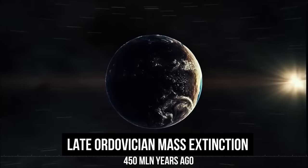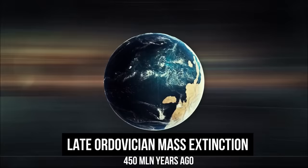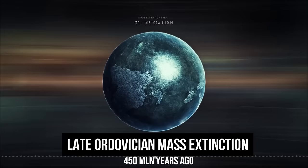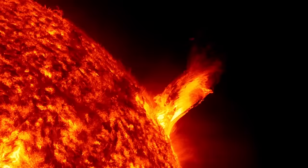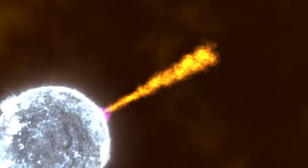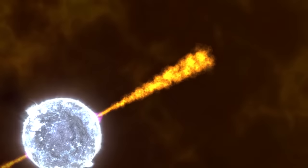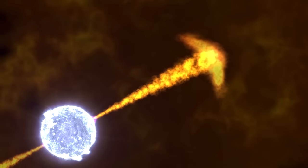Paleontologists suspect that 450 million years ago, a gamma ray burst caused the late Ordovician mass extinction. That was when, for some unknown reasons, more than 85% of living species suddenly died out. Unfortunately, unlike solar storms, there's no way to predict a lethal gamma ray burst as it flashes through space at the speed of light.